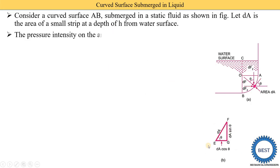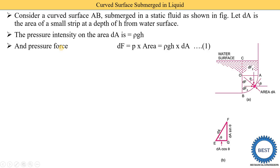The pressure intensity on the area DA is ρGH, meaning the equation of pressure is ρGH and the pressure acting on this strip is ρGH. ρ of any liquid is constant, G is also constant at 9.81, so H is the variable factor. If H increases, the pressure intensity increases. Here we need to find out the pressure force or total force.